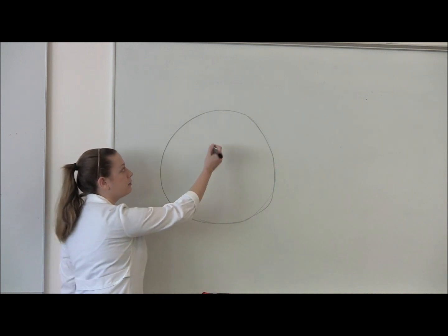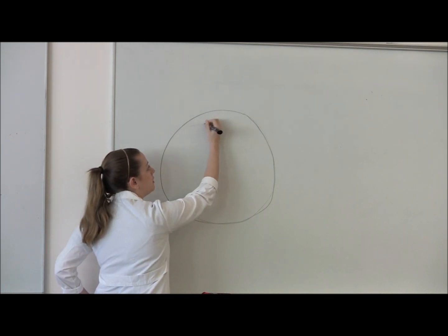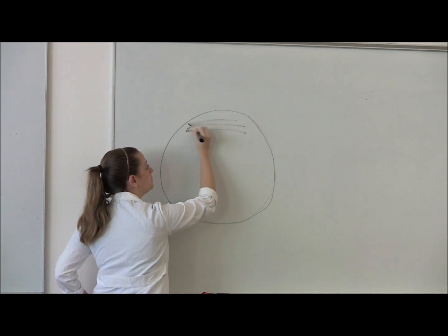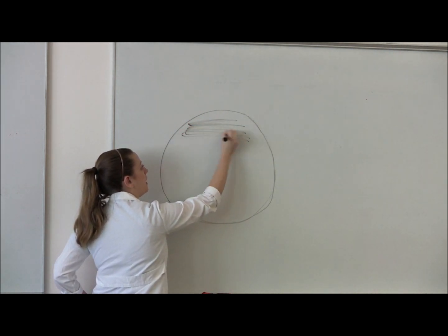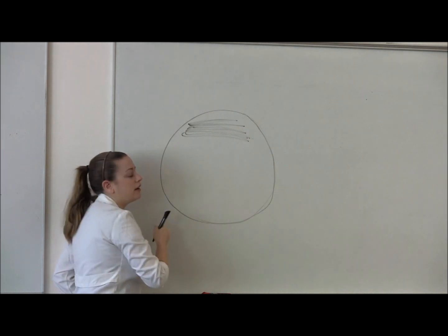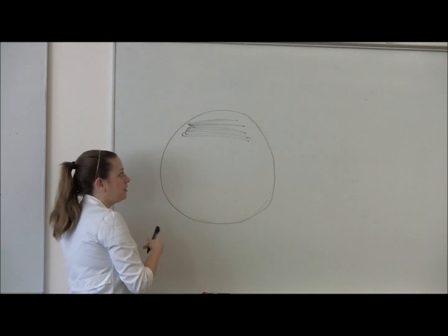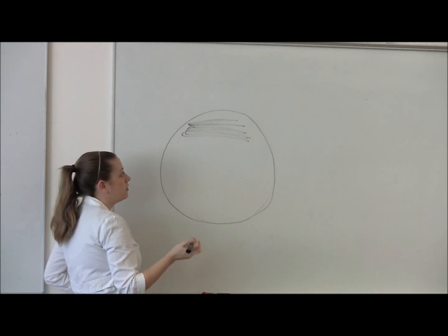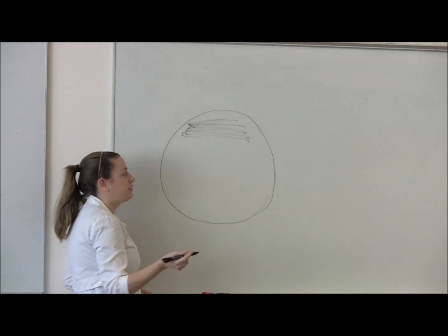Once you have bacteria on your loop, you're going to gently touch the loop to your first quadrant of your plate, and then spread the bacteria out in this first quadrant. After you do that, it's important that you flame your loop once again until the loop is red hot so that you get all of the bacteria off of the loop.